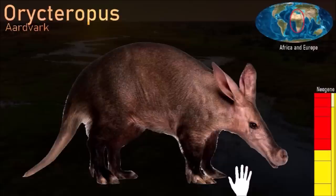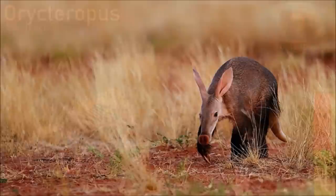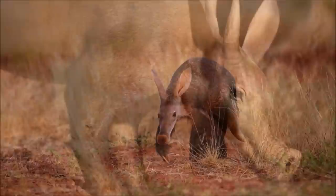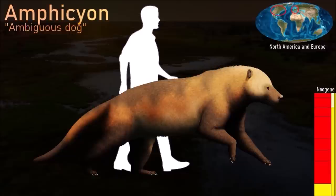The sole living Orycteropus species is the aardvark — not only is it the only species in the genus, it is also the only survivor in the entire mammal order Tubulidentata. The aardvark lives in sub-Saharan Africa where, for protection from predators, it sleeps during the day and comes out at night to feed on insects. It uses its sharp front claws to tear open termite nests, then laps up the insects with its extremely long tongue. Fossil relatives of the aardvark include Orycteropus gaudryi, which has been found on the Greek island of Samos.